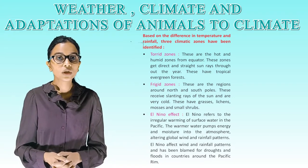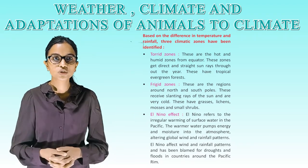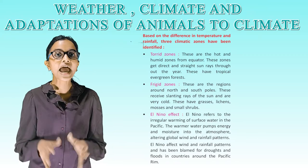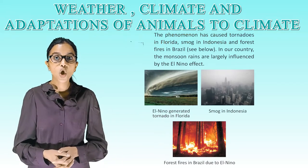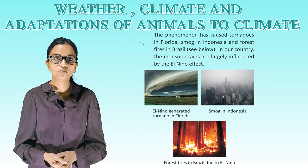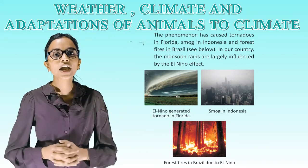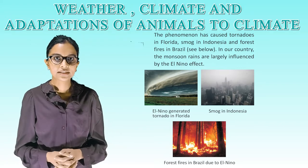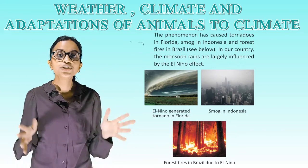El Niño effect: El Niño refers to the irregular warming of surface water in the Pacific Ocean. The warmer water pumps energy and moisture into the atmosphere, altering global wind and rainfall patterns. El Niño affects wind and rainfall patterns and has been blamed for droughts and floods in countries around the Pacific Rim. The phenomenon has caused tornadoes in Florida, smog in Indonesia and forest fires in Brazil. In our country, monsoon rains are largely influenced by the El Niño effect.